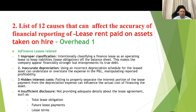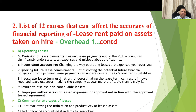Number 4 is insufficient disclosures — not providing adequate details about the lease agreement such as total lease obligations, future lease payments, and lease terms. For operating leases: number 5 is omission of lease payments from the P&L, which can significantly understate total expenses. Number 6 is inconsistent accounting — changing how operating leases are expensed year over year. Number 7 is ignoring future lease commitments, understating long-term liabilities. Numbers 8 and 9 are inaccurate lease term estimates and failing to disclose non-cancellable leases. Number 10 is improper authorization of lease expenses. Common to both lease types: not maximizing utilization of leased assets and not following accounting standards for reporting.